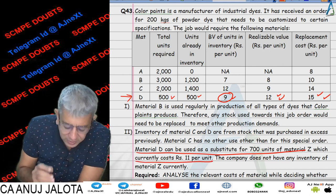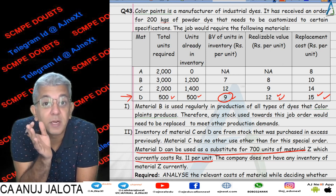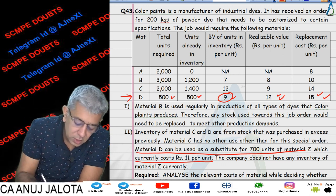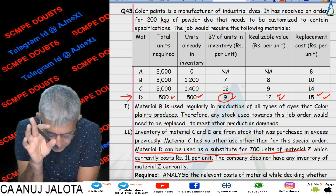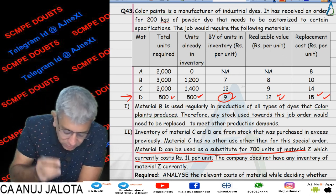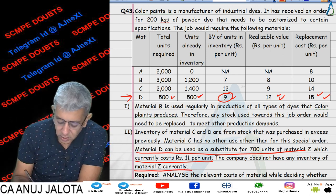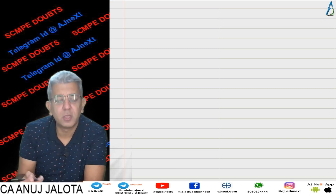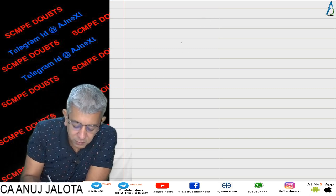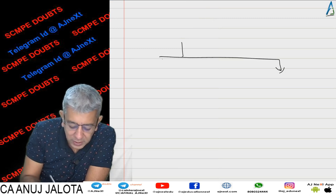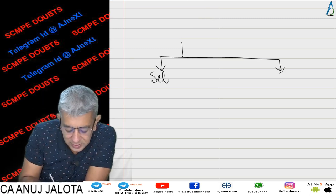So if Material D was not used for this offer, it could be used in place of Material Z — 500 units of D would substitute for 700 units of Z. The company does not have any inventory of Material Z currently, so for Z we have no stock. Now, how do we answer such questions? We always think: what if the offer had not come? For Material D you have two options — which two? Either sell in the market, or use it as a substitute.